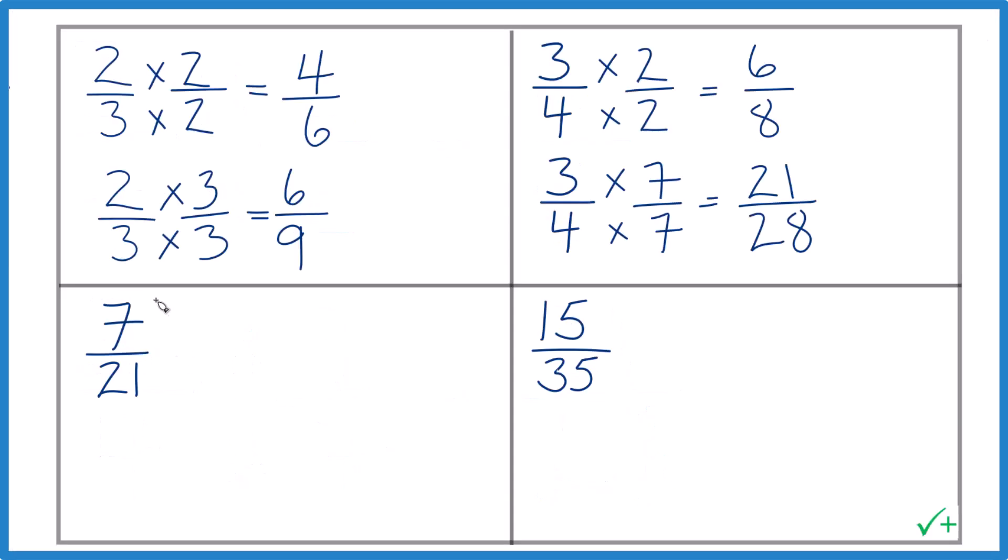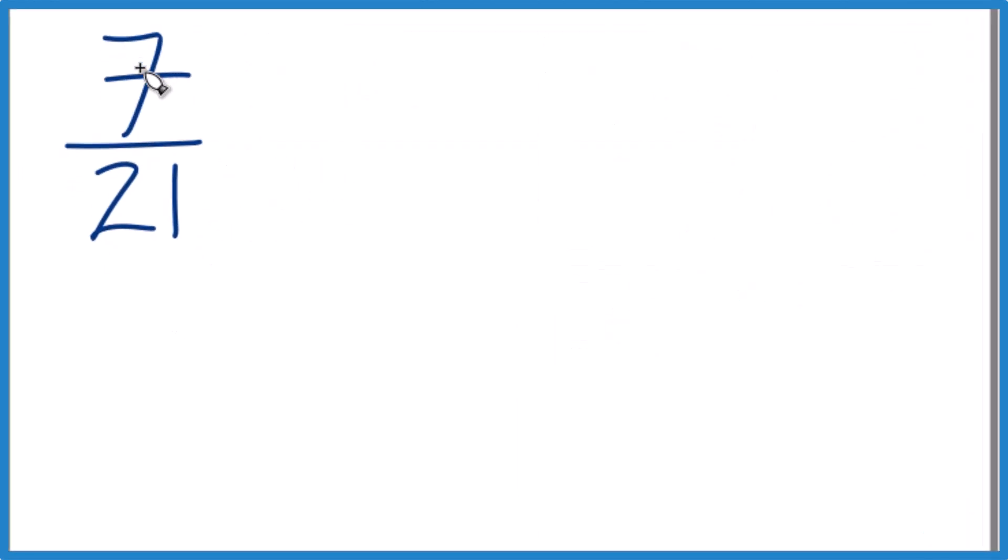Sometimes you'll have fractions you need to simplify. For example, 7 over 21. 7 goes into both of these numbers. 7 divided by 7, that's 1. 21 divided by 7, that's 3. So an equivalent fraction to 7 twenty-firsts, that's one-third. So we just simplified this.